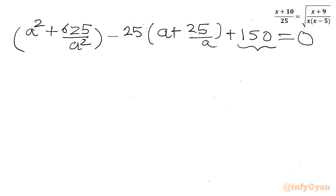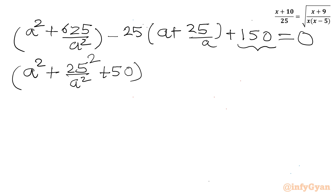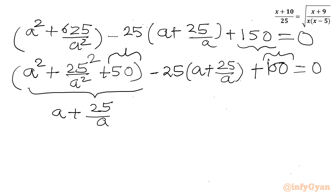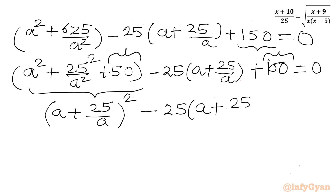Now I split 150 as 100 + 50. The bracket (a² + 625/a²) can be written as (a + 25/a)² minus 50, so with the +50 we get (a + 25/a)². This gives: (a + 25/a)² minus 25(a + 25/a) + 100 equals 0. This is one quadratic equation in (a + 25/a).